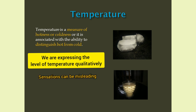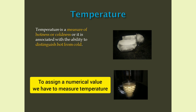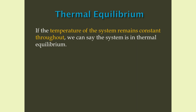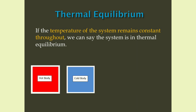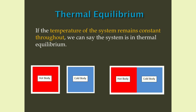But we cannot assign any numerical value to temperature based on our psychological sensations, because sensations can be misleading. In order to assign a numerical value to temperature, we should be able to measure it. Therefore, measurement of temperature is very important. If the temperature of the system remains constant throughout, we can say the system is in thermal equilibrium. Consider a hot body and a cold body. When I brought them into contact, heat transfer will take place from hot body to cold body, till they reach a common temperature. Finally, both bodies will attain the common temperature, and we can say the two bodies are in thermal equilibrium with each other.